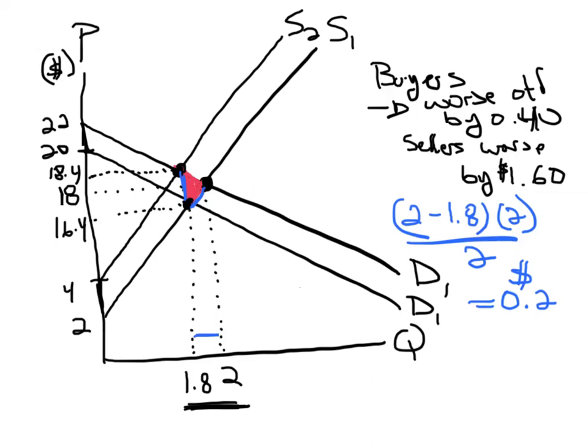Now, it doesn't matter if it's the sellers who are sending this tax to the government or it's the buyers who are sending this tax to the government. If the quantity in the market is reduced to 1.8, the deadweight loss is going to be the area of that triangle, which is going to be equal to one side. One side is the reduction in quantity, and the other side is the tax.